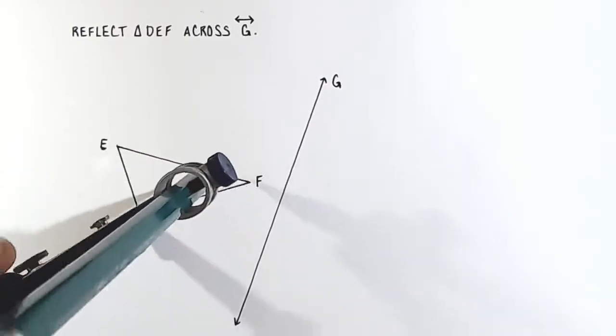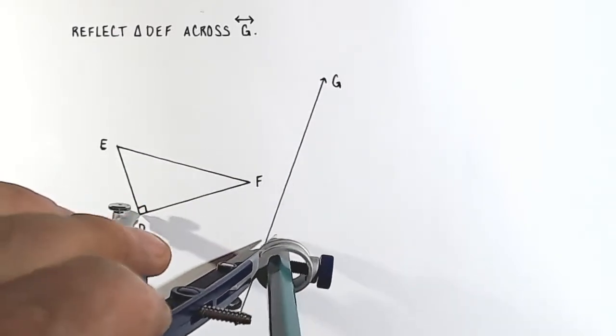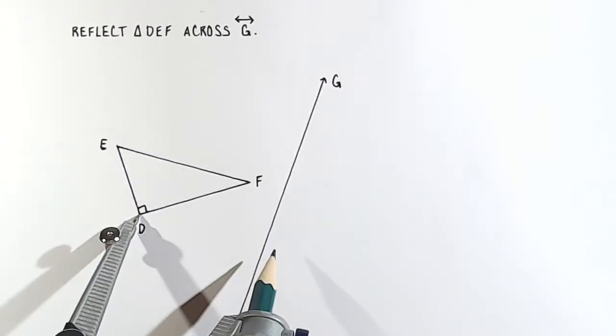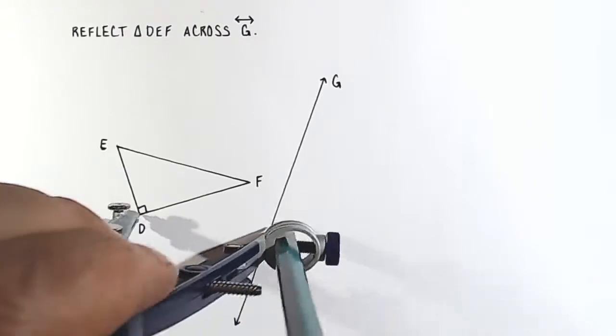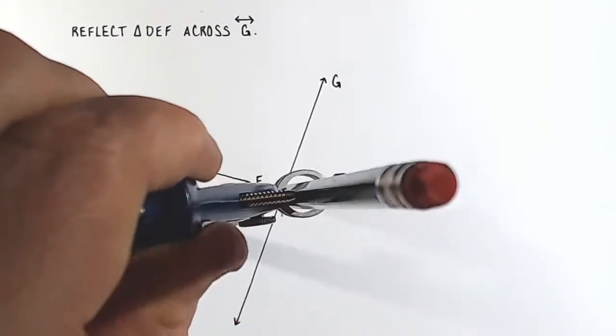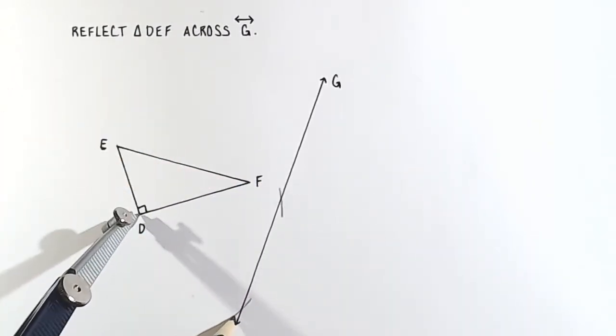Place your compass point on D, and go a little bit past your line with the radius of your compass, so that you can draw two arcs. One here, and one here.